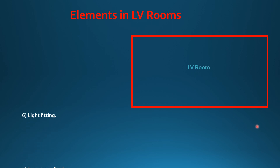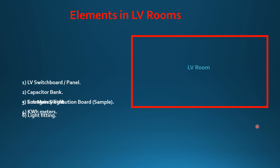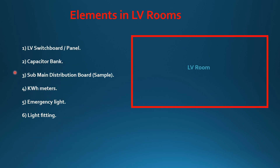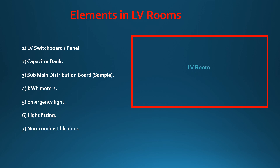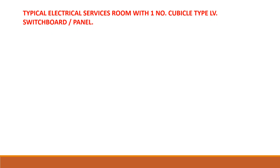In the LV rooms we require light fixtures, emergency lights, and switchgear elements such as LV panels, capacitor banks, sub-main distribution boards, and kilowatt meters. Finally, the door should be a non-combustible door.